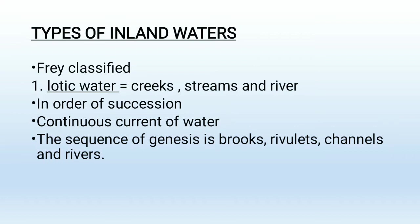The first classification is lotic water. Under lotic water, creeks, streams, and rivers come, in the order of their succession. Creeks are the smallest, then creeks make streams, and streams make rivers. Rivers are large flowing water bodies, streams are medium-sized, and creeks are of small size.